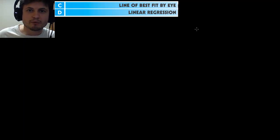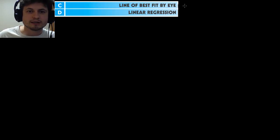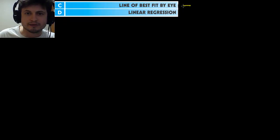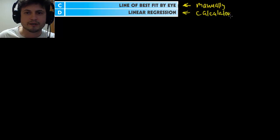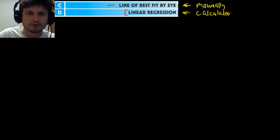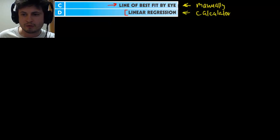Hello YouTube and welcome back to What the Math. Today we're continuing in chapter 11, doing two sub-chapters: C and D. One is called 'Line of Best Fit by Eye' and one is called 'Linear Regression.' These two topics are basically the same thing — here we build a line of best fit by hand or by eye, and here we use a calculator to construct the same line more accurately. The calculator method is the more important part, but you should know both, as you may be required to do it by hand at university.